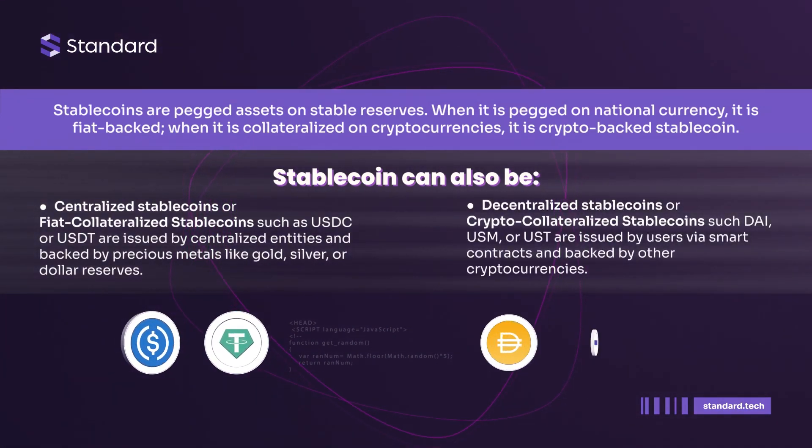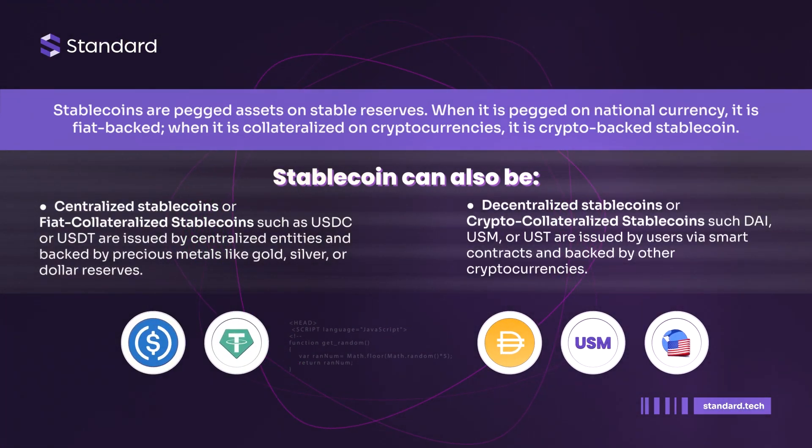Stablecoins are pegged assets on stable reserves. When it is pegged on national currency, it is fiat-backed; when it is collateralized on cryptocurrencies, it is a crypto-backed stablecoin.